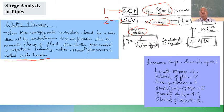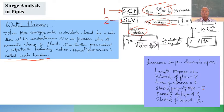The increase in pressure depends upon these parameters: length of the pipe L, velocity of flow V, time of closure t, density of the liquid ρ, elastic property of the pipe material E, thickness of the pipeline, and the bulk modulus K of the liquid flowing.